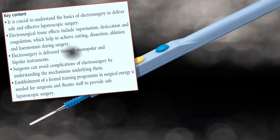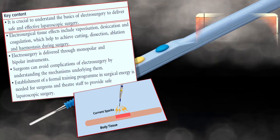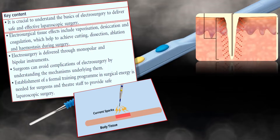It is crucial to understand the basics of electrosurgery to deliver safe and effective laparoscopic surgery. The next point is about electrosurgical effects, which help us achieve different goals. Electrosurgical tissue effects include vaporization, desiccation, and coagulation, which help us achieve cutting, desiccation, ablation, and hemostasis during surgery.